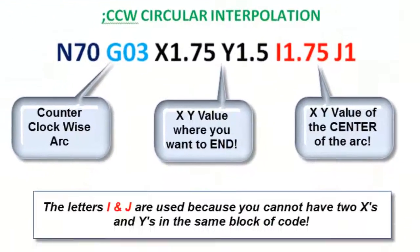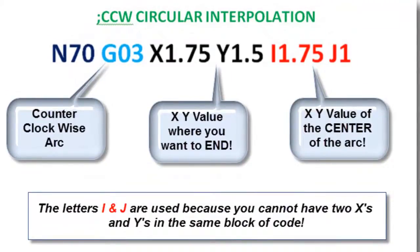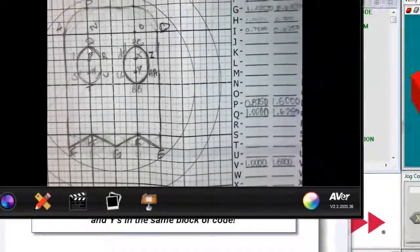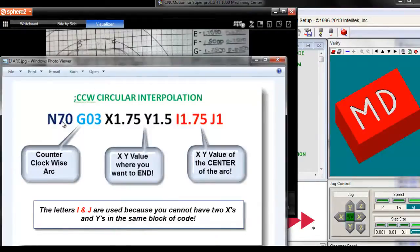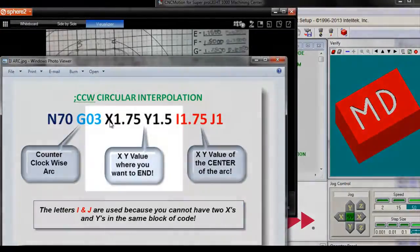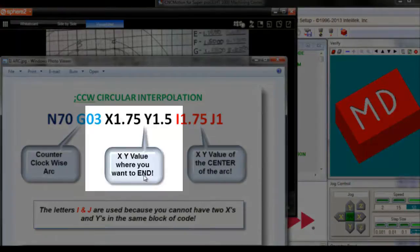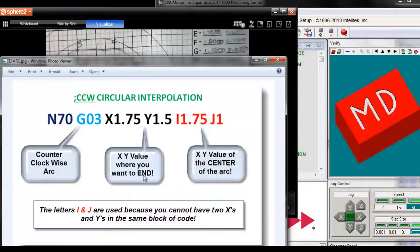Here are the rules. If we want to do a counterclockwise circular interpolation — meaning we want to go from Q to P around the letter V — we're going to put in our block of code our N number, then a counterclockwise arc which would be a G03, then we have to put the X, Y value where you want to end. The machine is already at a point from the last line of code, so you have to tell it where you want to end.